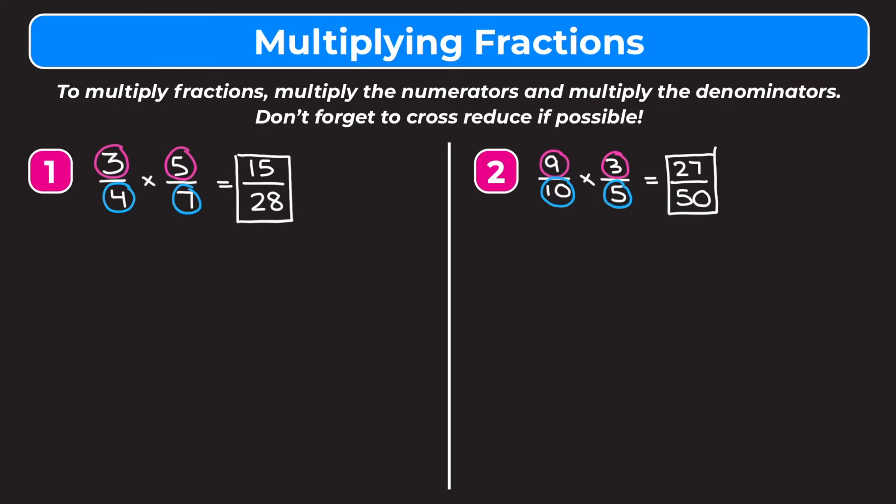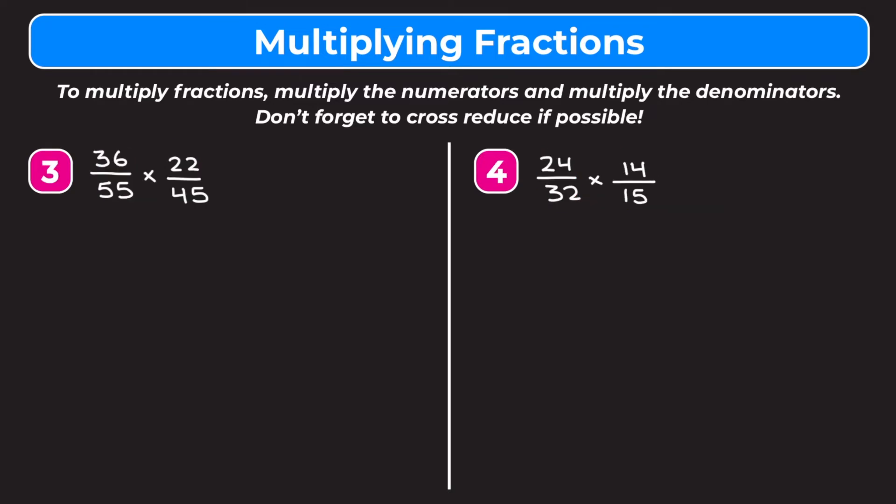Now we're going to look at a couple of examples that use cross-reducing. Example 3 is 36 fifty-fifths times 22 forty-fifths. You could just multiply straight across, but with numbers this big it gets messy and hard to simplify at the end. So we're going to use cross-reducing, which is a way to simplify the problem before we multiply.